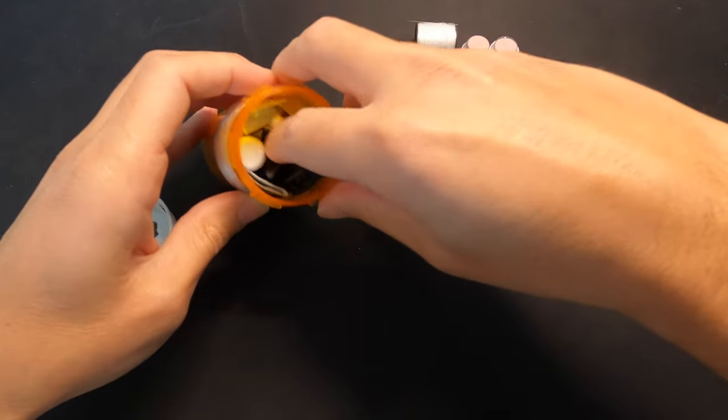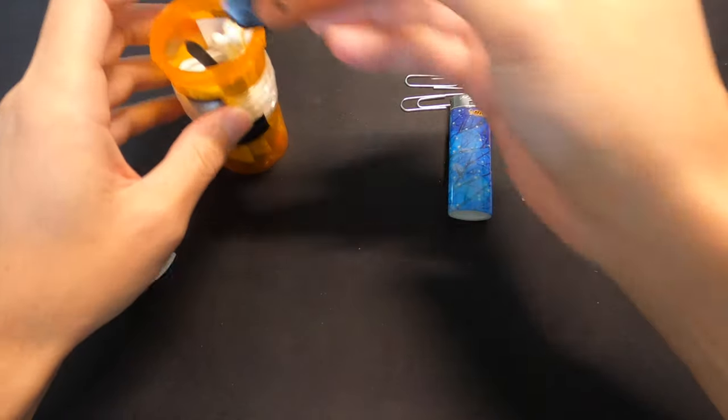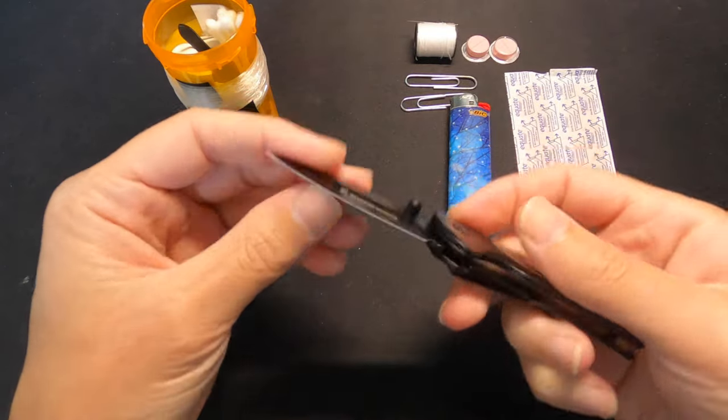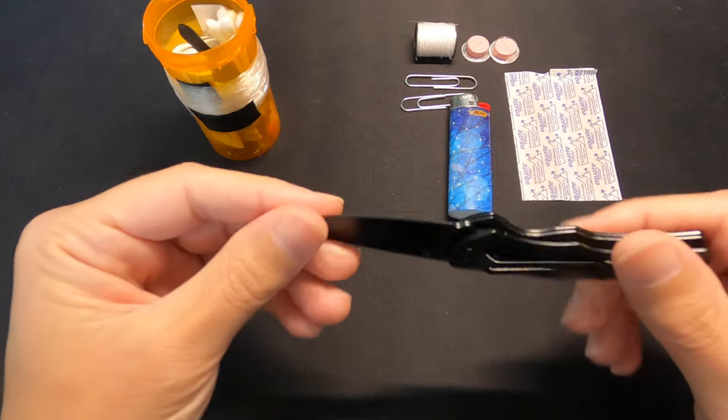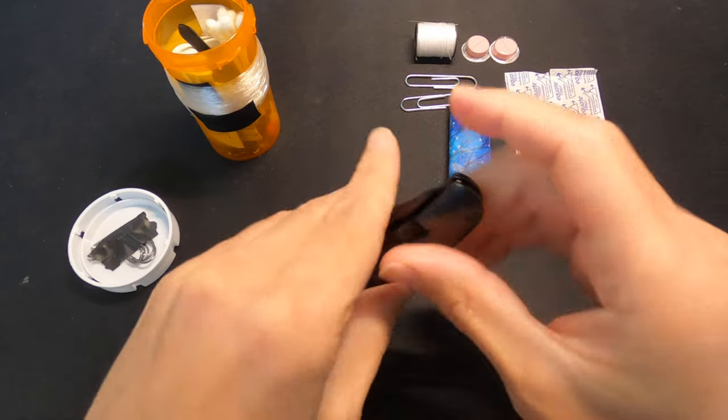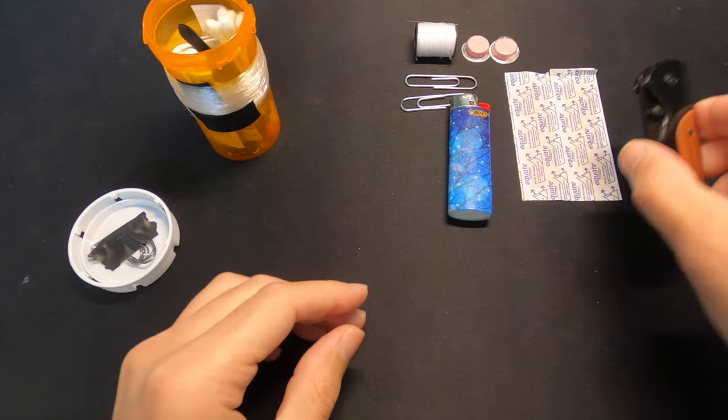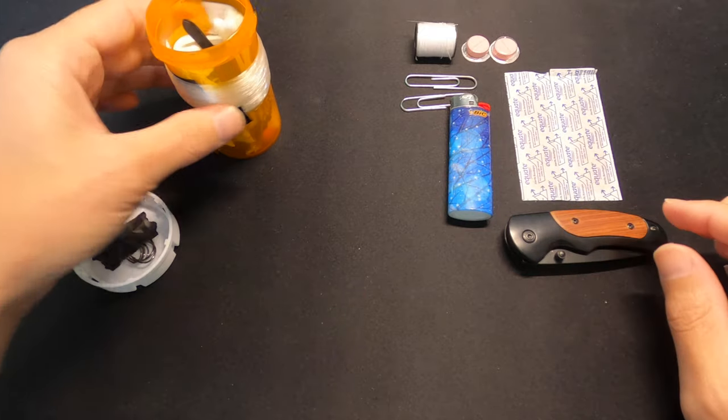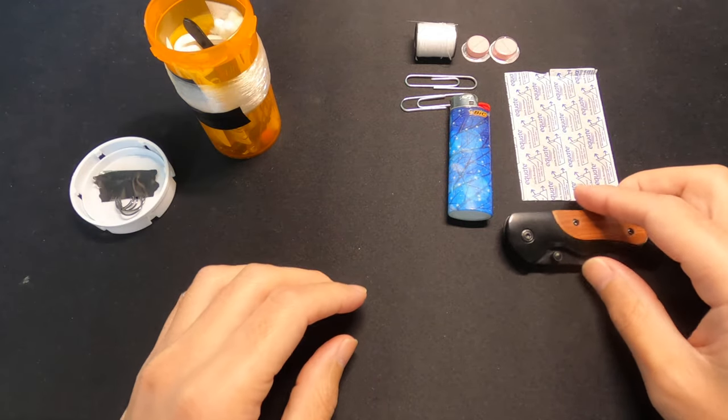Got a little pocket knife here. This one takes up a lot of room in there, but not so bad. Definitely great to have an extra knife on you. I always have one on me, but good to have. I think it'd be awesome to have one of those little Swiss Army knives in here. They're small and they have extra survival stuff inside.